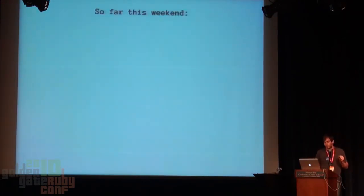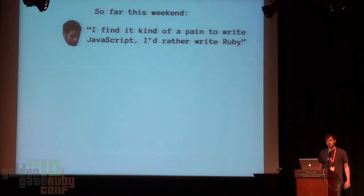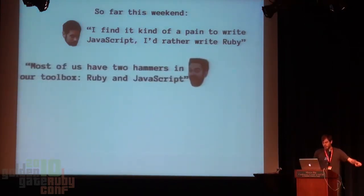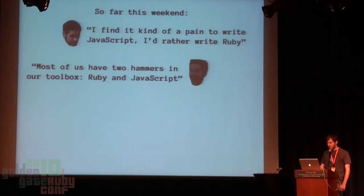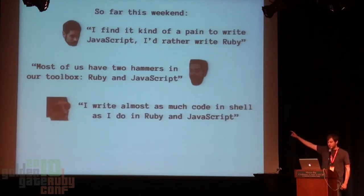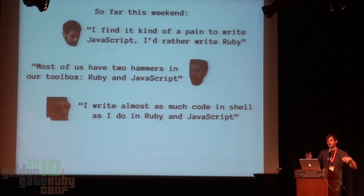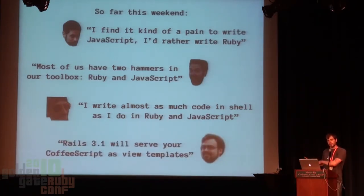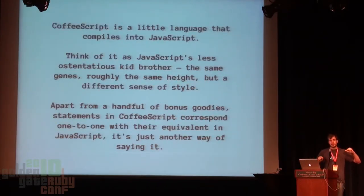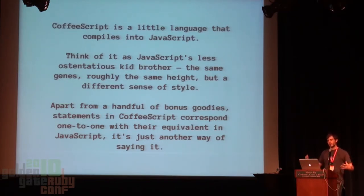So far this weekend, we've heard people say: I find it kind of a pain to write JavaScript, I'd rather write Ruby. Most of us have two hammers in our toolbox — Ruby and JavaScript. All of us aren't just Ruby programmers, we're Ruby and JavaScript programmers. And then you heard that Rails 3.1 will serve your CoffeeScript as new templates. So, let's look at CoffeeScript, shamelessly lifted from coffeescript.org verbatim. To assign things it looks just like JavaScript. You can do string interpolation in double-quoted strings just like in Ruby. You can do interpolation in regexes. You can put if statements at the end of the line, just like in Ruby.